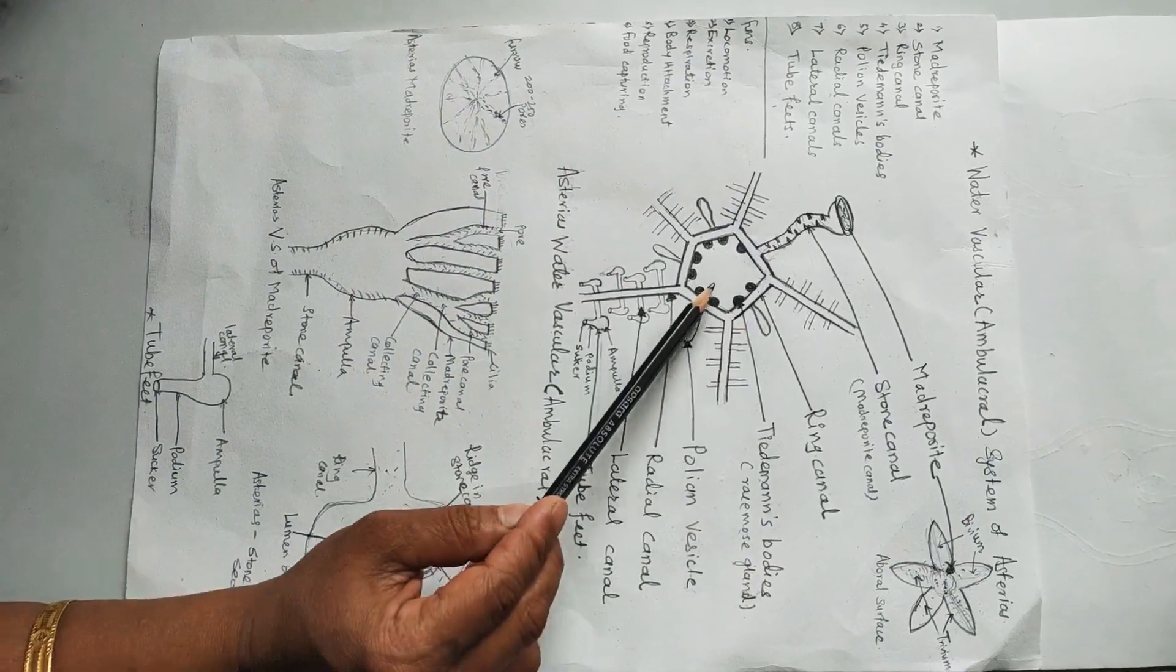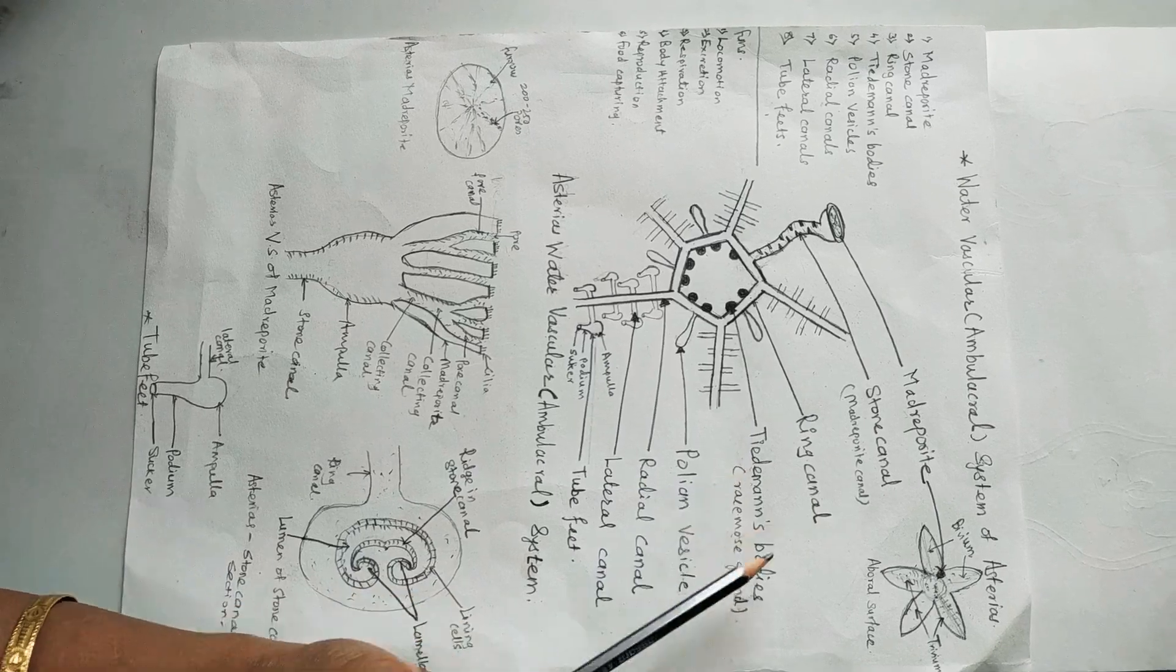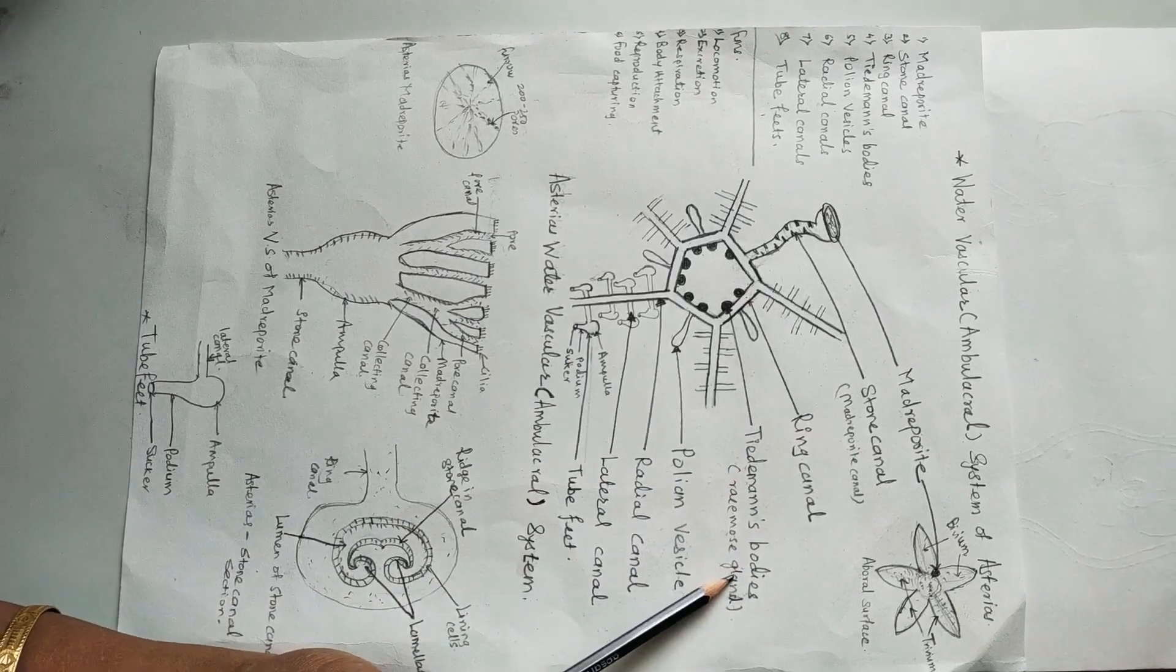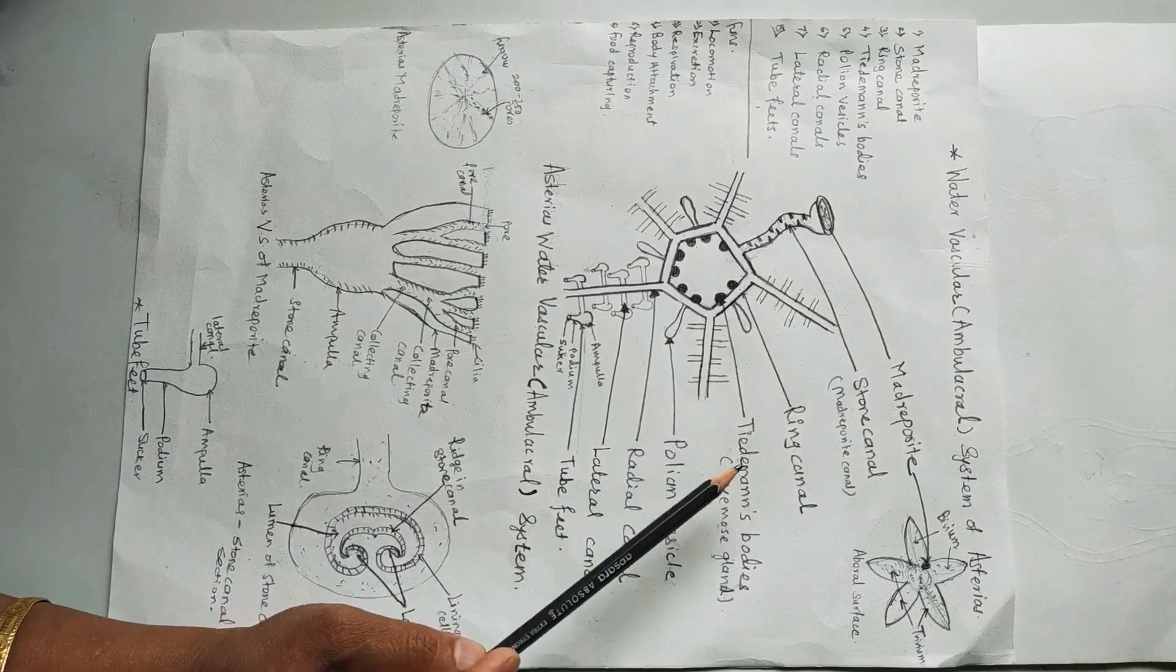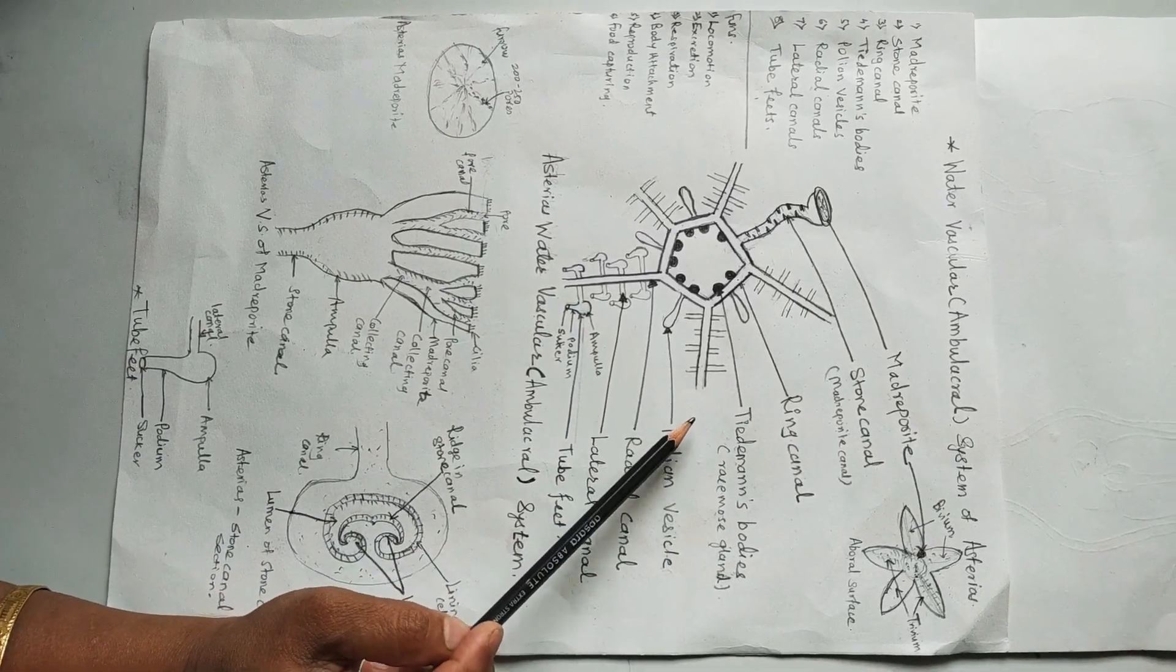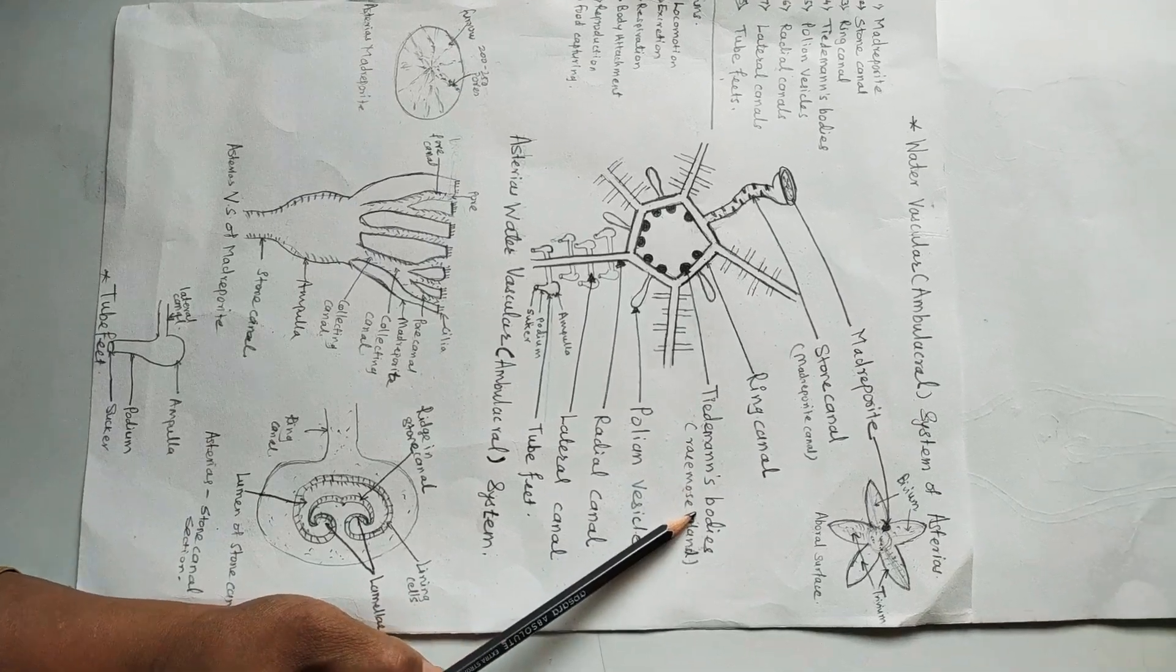Functions of Tiedemann's body: exact function is unknown, but they may be considered as a lymphatic gland to manufacture the amoebocytes, as well as they produce the phagocytic coelomocytes.